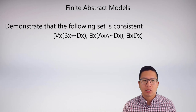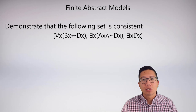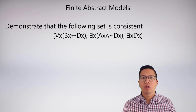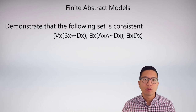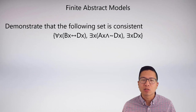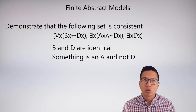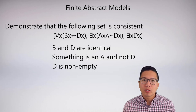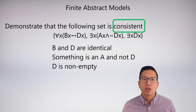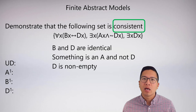I'm going to demonstrate that the following set of three statements is consistent. The first thing I need to do is abstractly translate them, because we're doing semantics here and meaning is everything. The first sentence, 'for all x, bx biconditional dx,' means b and d are identical. The second sentence says something is an a and not a d. And the third sentence is pretty straightforward: d is non-empty, which is just a fancy way of saying something is a d.